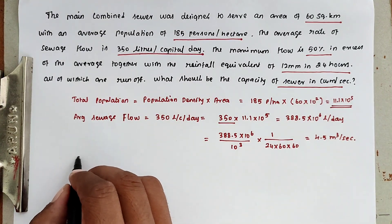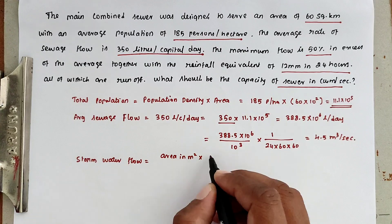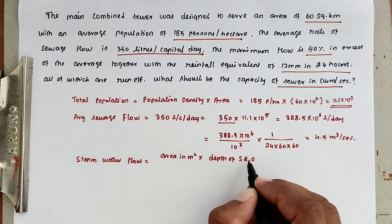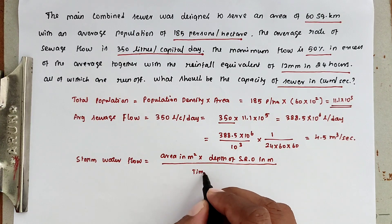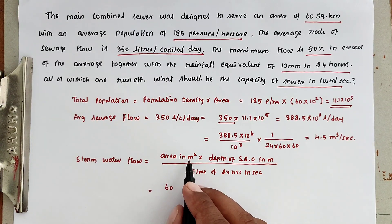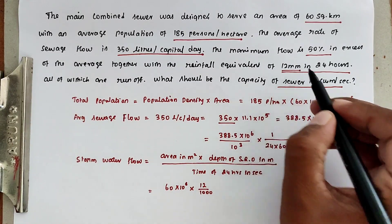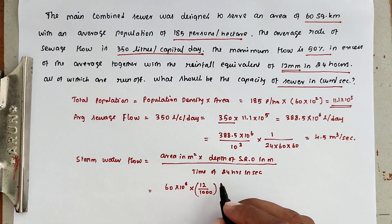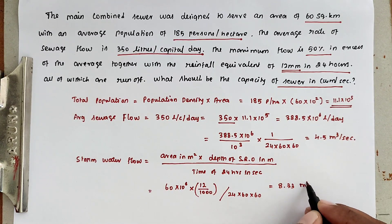Now we find out the stormwater flow. We use the formula: area in meter square into depth of stormwater flow in meters, divided by time of 24 hours in seconds. The area is 60 square kilometers, converted to 60 × 10⁶ m². Depth is 12 mm, converted to 12 divided by 1000 meters. Time is 24 into 60 into 60 seconds. Now we get the value of 8.33 meter cube per second.